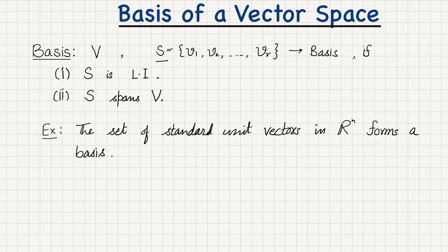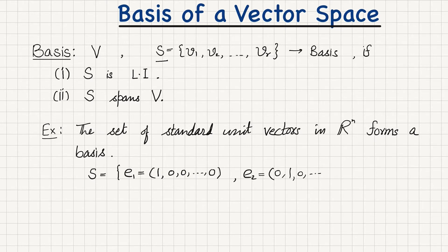The set of standard unit vectors in Rⁿ forms a basis. In general, the standard unit vector eᵢ has a one in the i-th component and zeros elsewhere. We can show very easily that this set of vectors is a basis — meaning it is linearly independent and it spans the whole vector space.